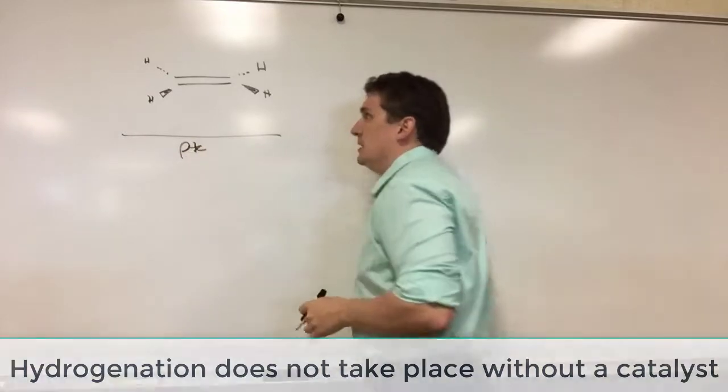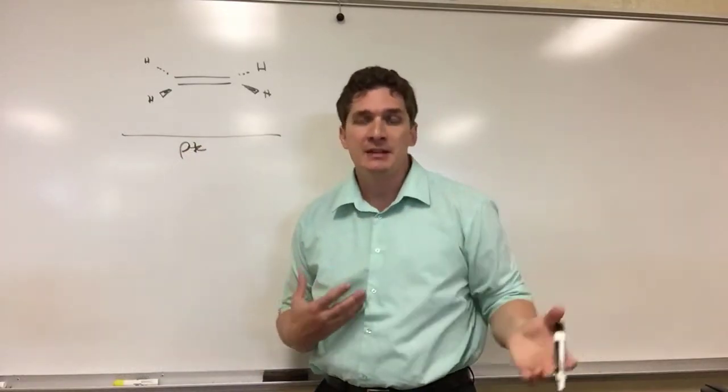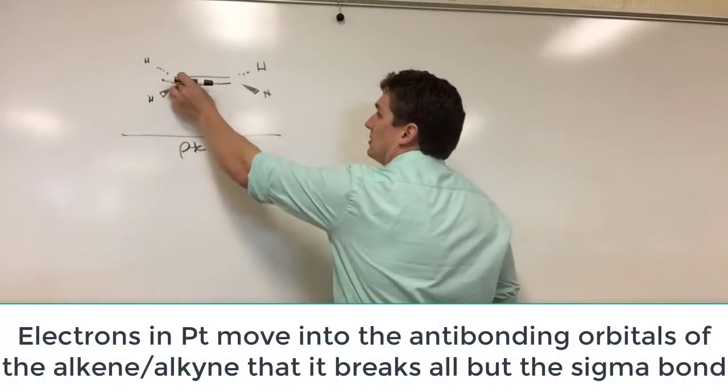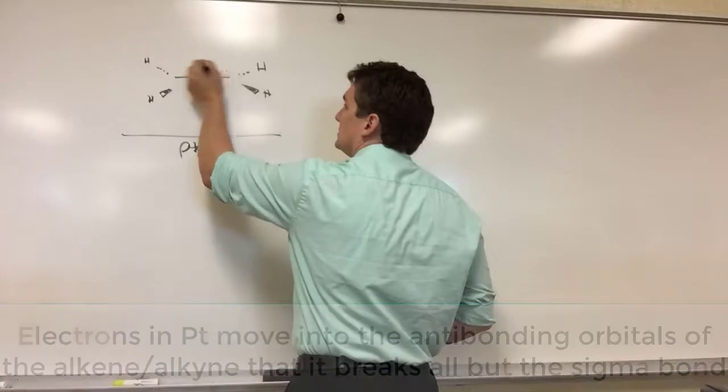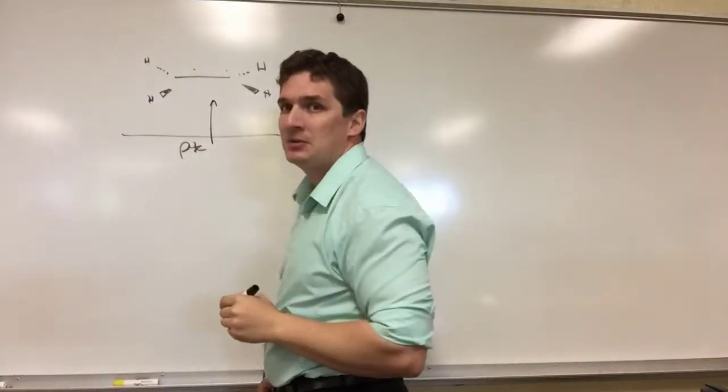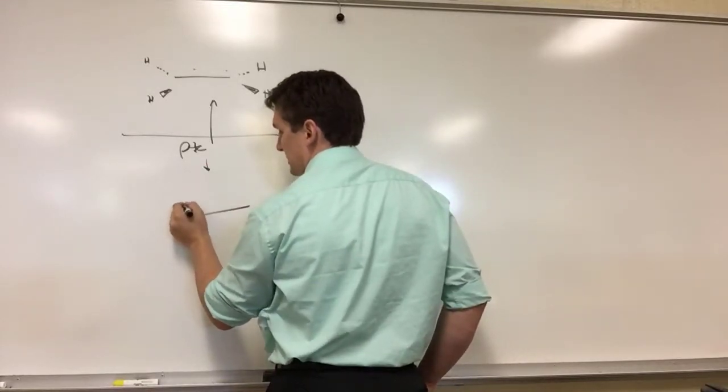What will happen is the platinum is so electron-rich it will donate electrons into the antibonding orbitals on ethylene and break this carbon-carbon double bond. Now this is done by electron donation from the platinum to the ethylene, so what we end up getting is a structure that looks kind of like this, and then the bond to the Pt.